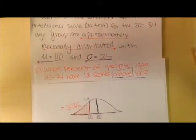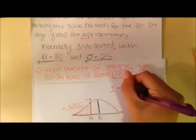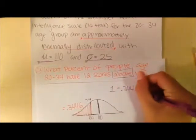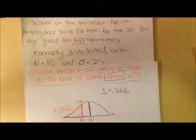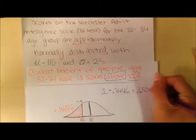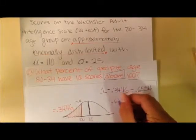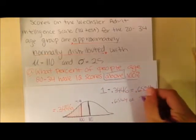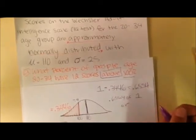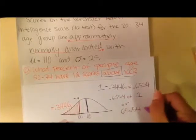So all we'll have to do is take our entire area, which is 1, and subtract 0.3446. This should give you an answer of 0.6554. So what that is basically saying is 0.6554 of 1 or 65.54%.